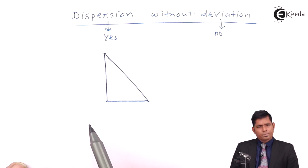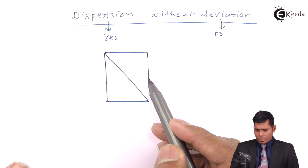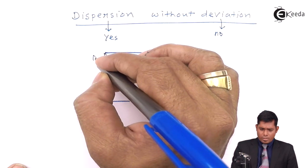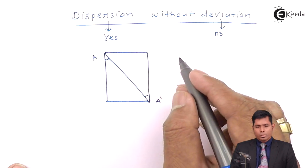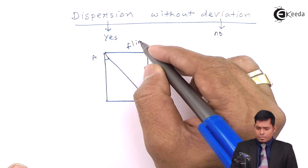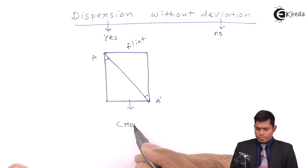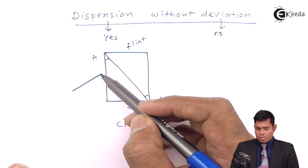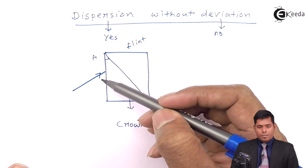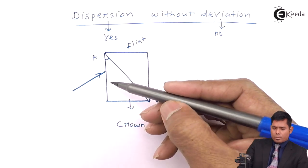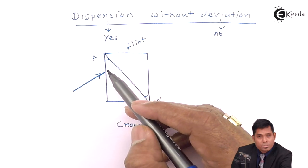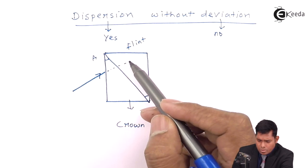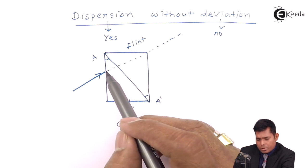One prism is kept normally, and the other prism is kept inverted. Here, A is the angle of the first prism and A' is the angle of the other prism, which is made up of flint glass. The first one is made up of crown glass. The ray of white light falls obliquely on the side of the prism and gets dispersed. Without the second prism, the ray would have gone straight, but dispersion will occur.